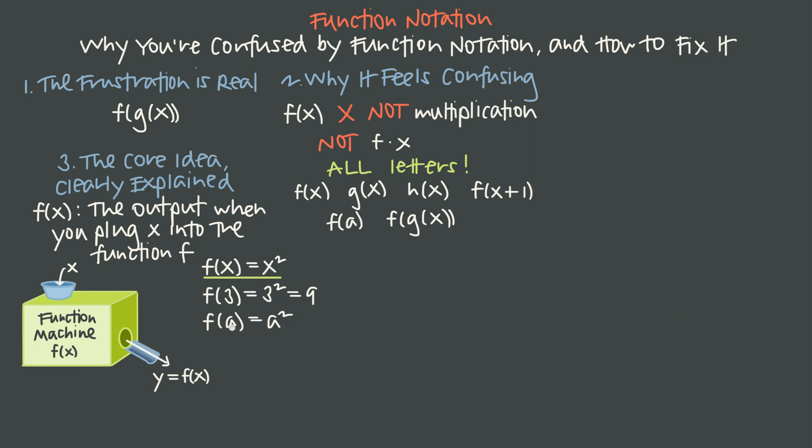If the input is a, f turns that into a squared. If the input is x plus 1, then f turns that into x plus 1 quantity squared. It doesn't matter what the input is. This particular function f tells us that the output is going to be the square of that value that we put in.